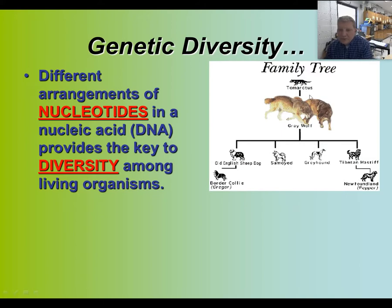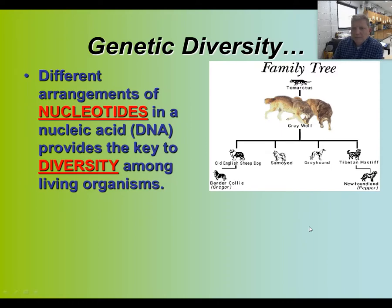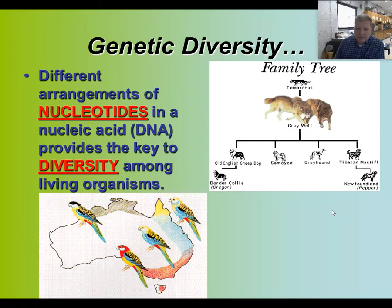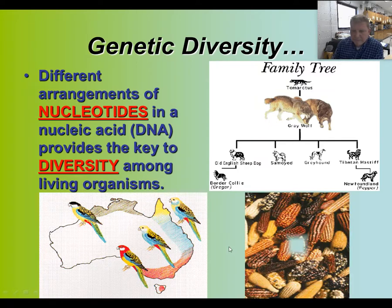Looking at a family tree for the gray wolf, it came from an ancient ancestor. From the gray wolf we got dogs like sheepdogs, Samoyeds, greyhounds, and mastiffs. From mastiffs we got Newfoundlands, and from sheepdogs we got border collies. There's a lot of genetic diversity in dogs, but they're all essentially the same species. Similarly, there are coloring variations in birds and in corn, such as Indian corn.